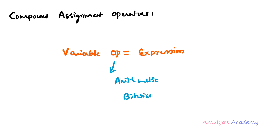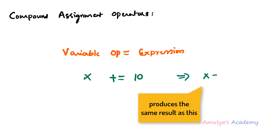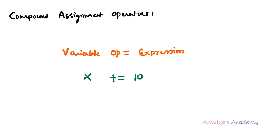We can use arithmetic operators or bitwise operators, but we need to use operators that work with two operands — we cannot use bitwise complement here. For example, if we take x plus-equal-to 10, it will add 10 to x and store the total result in variable x. This is equivalent to x equal to x plus 10. The operation is performed on the expression and the variable, and the result is stored in the left-side variable.